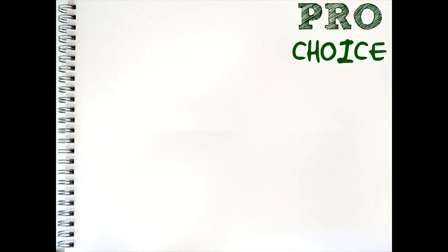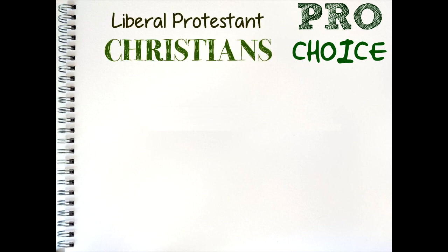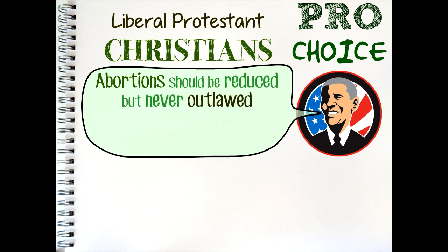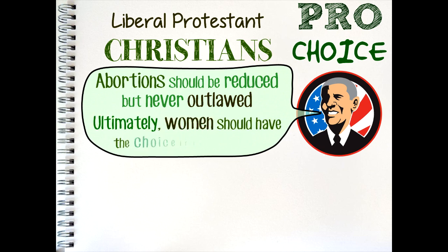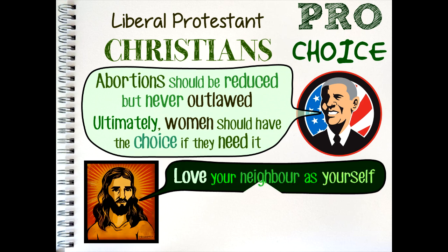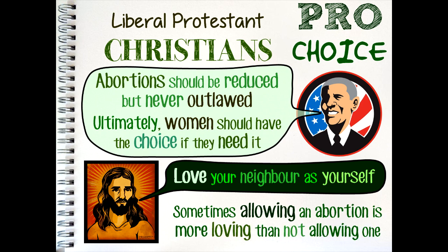On the other hand, some Christians — particularly liberal Protestant Christians — fit into the pro-choice category. Although they are in favour of abortion, they do tend to want to reduce the circumstances in which abortions take place. An example of a liberal Protestant Christian would be American President Barack Obama, who says that abortion should be reduced through good sex education and good welfare support, but that ultimately women should have the choice whether to have an abortion or not. In the Gospels, Jesus taught us to love our neighbour, and so it may be the case that in some circumstances, allowing an abortion is the most loving thing to do, rather than allowing the pregnancy to continue.